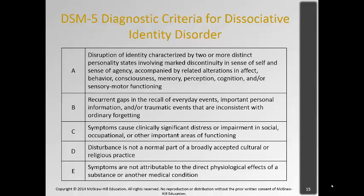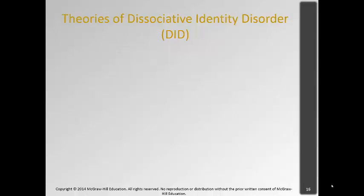To get diagnosed with DID, you have to have two or more distinct personalities that differ in behavior, consciousness, memory, and perception. You often see a child persona, and they're called alters — an adult, a more aggressive, or more sexualized one. There are recurrent gaps in recall of everyday events. This causes clinically significant distress or impairment in social, occupational, and other important areas of functioning. It's not part of a normally accepted cultural or religious practice — so it's not like being possessed by spirits. And it's not related to any other physiological cause.